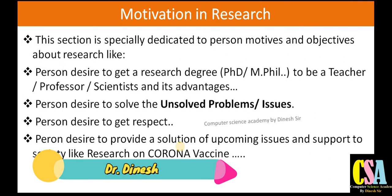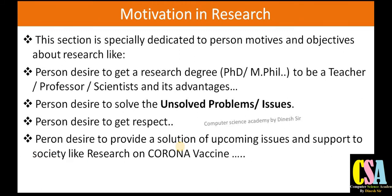The next motivation: a person's desire to provide a solution to society — like research on a Corona vaccine. In the present situation, we have so many issues worldwide. Many doctors, scientists, and researchers all over the country are engaged in finding a solution to this particular problem. That is a kind of research. If someone searches out a particular vaccination, it will definitely be beneficial to us — for the whole society, the whole country, the whole world. That is what we call research: finding the solution to a serious problem so that the benefit can reach everyone in society.